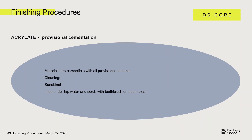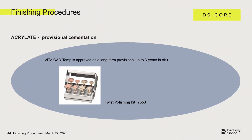PMMA temporaries are intended for long-term use. They can be sandblasted, then rinsed under running water or cleaned with a steam jet, and are compatible with all temporary cements. It is important to ensure that a temporary cement without eugenol is used so as not to jeopardize the subsequent adhesive luting of the definitive ceramic restoration. Long-term temporaries should remain in situ for at least three months — for example, the material VITA CAD-Temp can remain in situ for up to three years. These long-term temporaries should be checked for tightness at regular intervals.